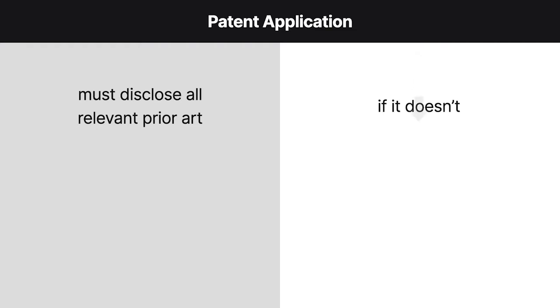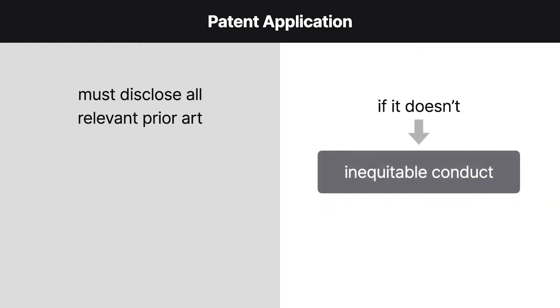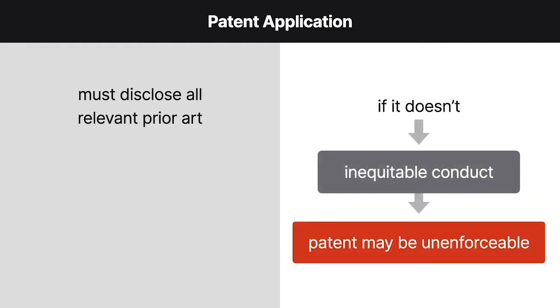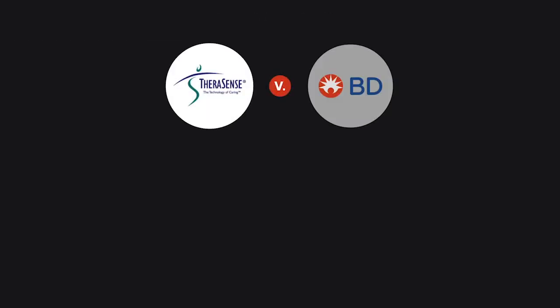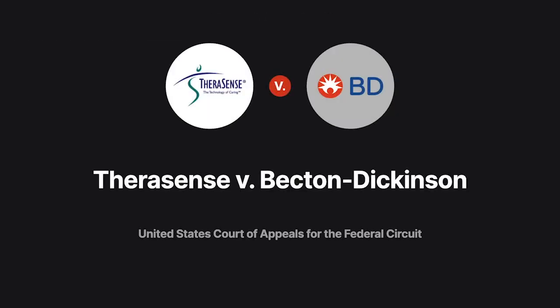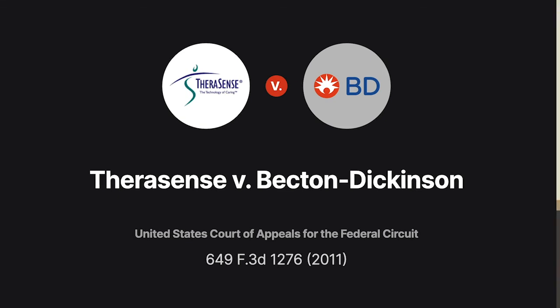A patent application must disclose all relevant prior art or risk running afoul of the dread doctrine of inequitable conduct, an affirmative defense to claims of infringement that can render a patent unenforceable. In Therasense v. Becton Dickinson, the Federal Circuit clarified just how blameworthy an applicant had to be for this doctrine to apply.